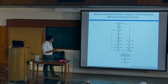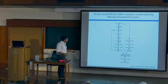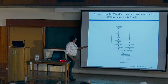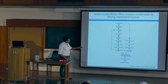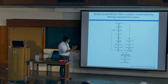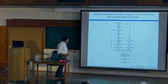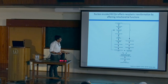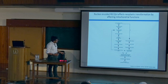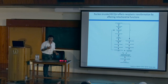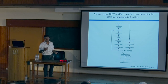To summarize the RECQL4 findings: its absence from mitochondria causes a decrease in mitochondrial replication, differences in mitochondrial structure, decreased mitochondrial membrane permeability, increased glycolysis, increased invasion capability, and an increase in neoplastic transformation — the first step of carcinogenesis.